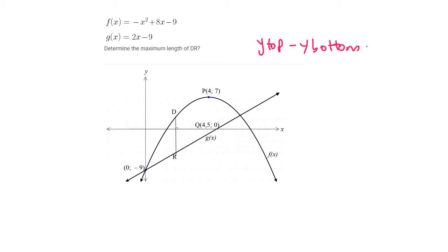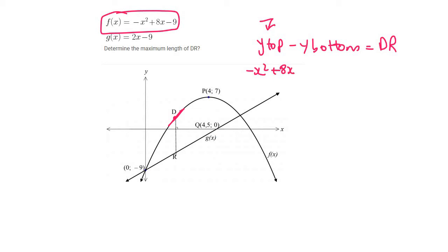That will give us the length of DR. Now instead of saying y, we replace it with the equation. D is the parabola, so we replace it with its equation: minus x squared plus 8x. That's the y-top, minus y-bottom. The y value of R is from the straight line, which is 2x minus 9. And that should give us the length of DR.